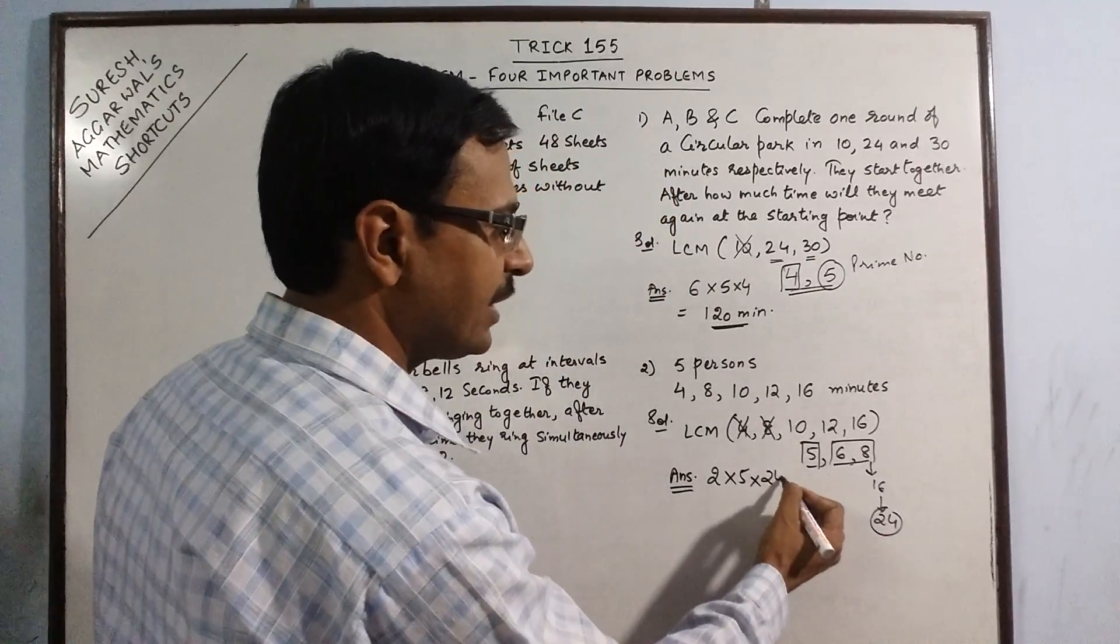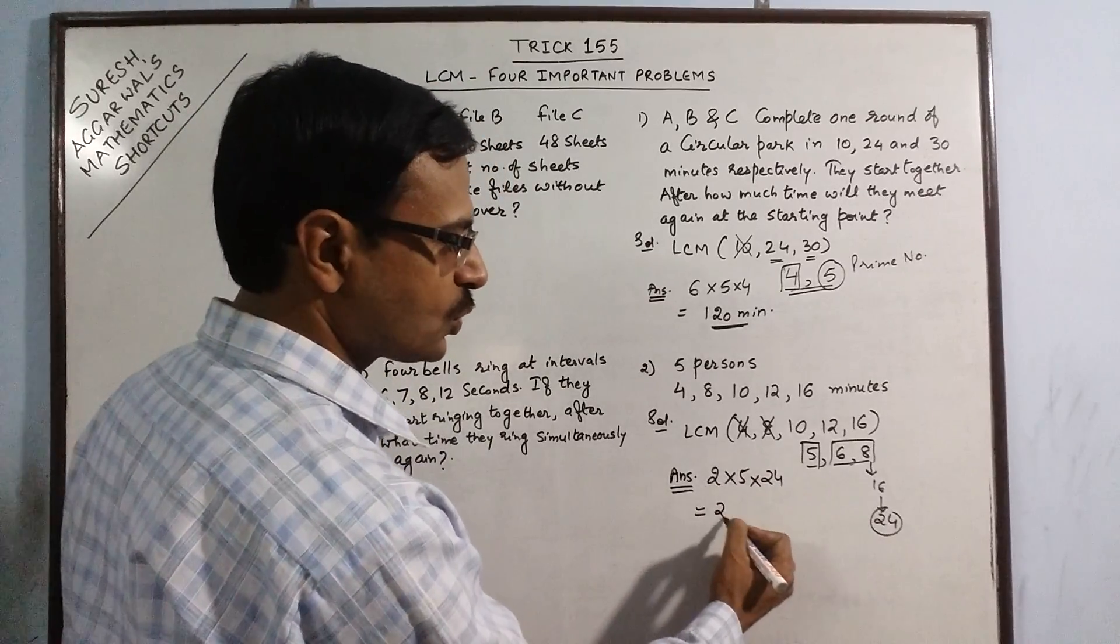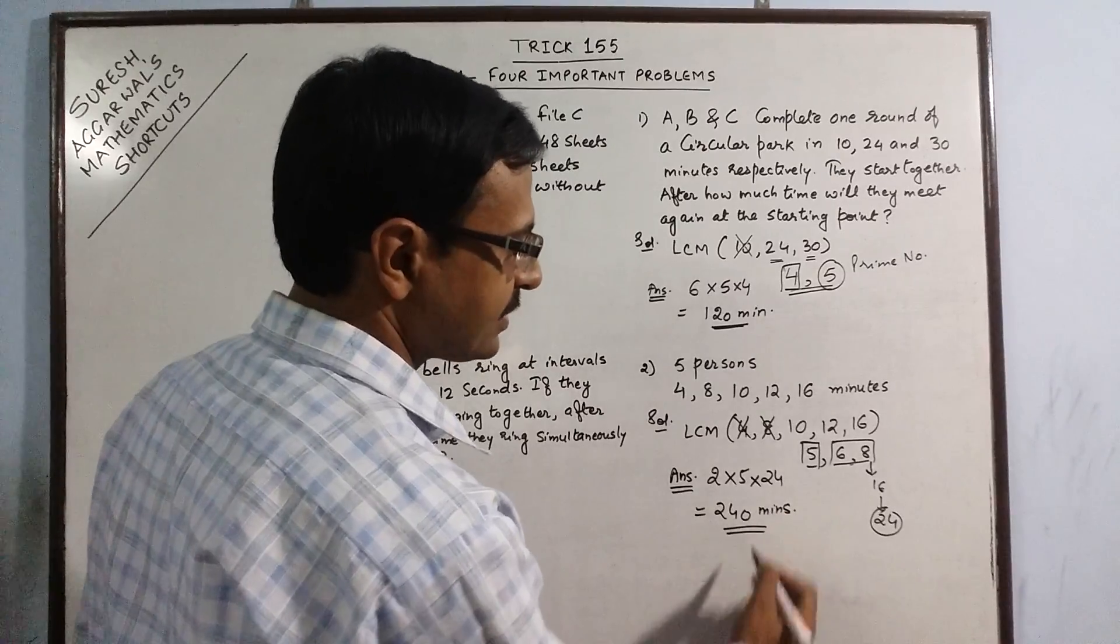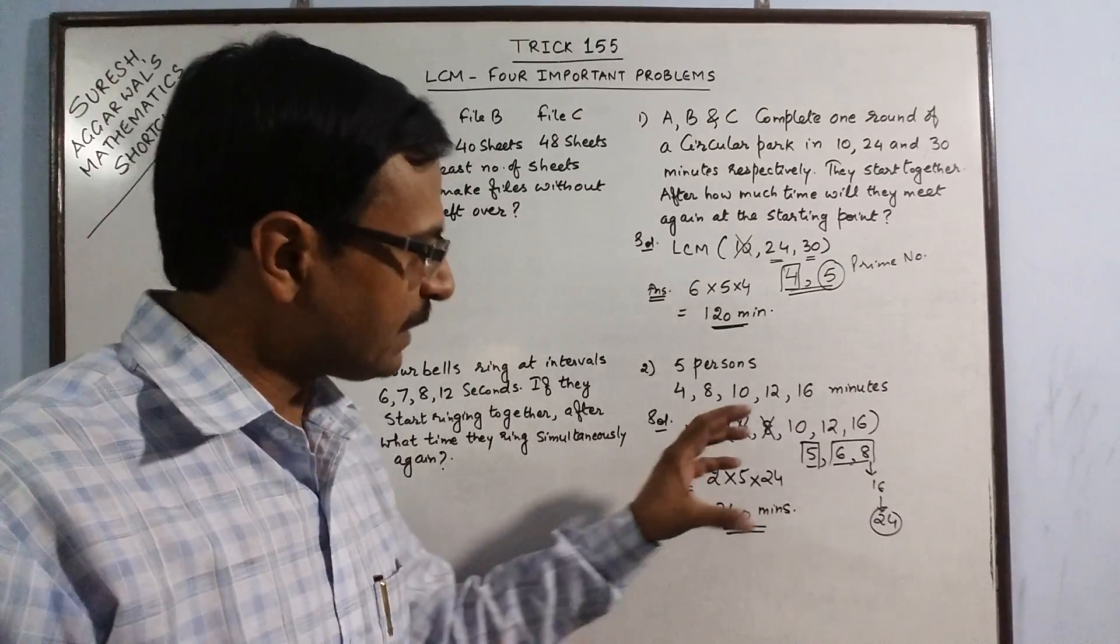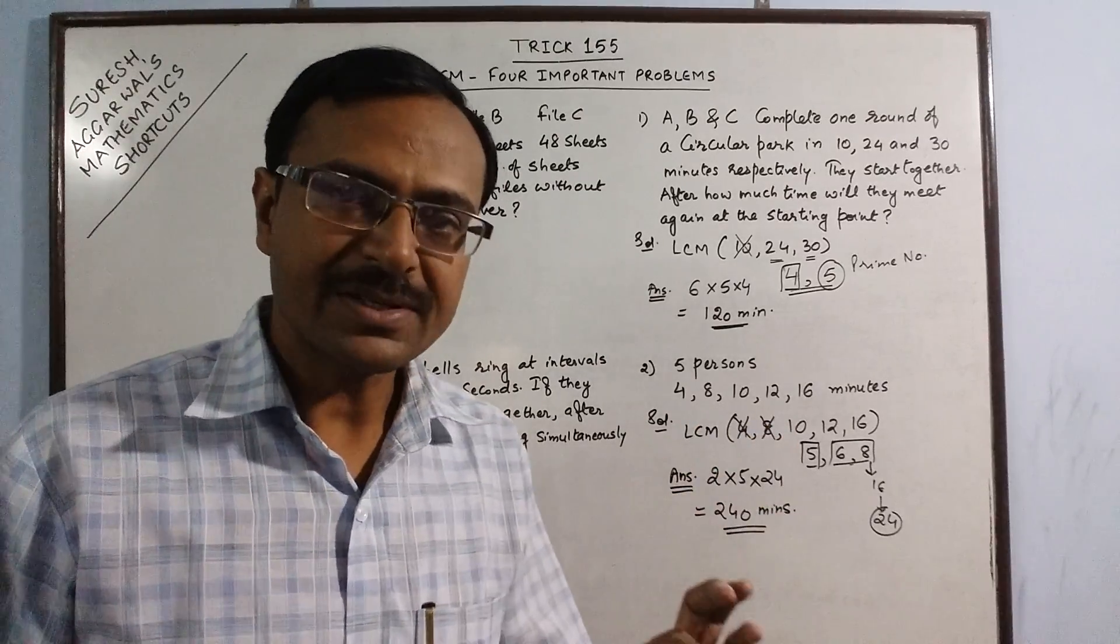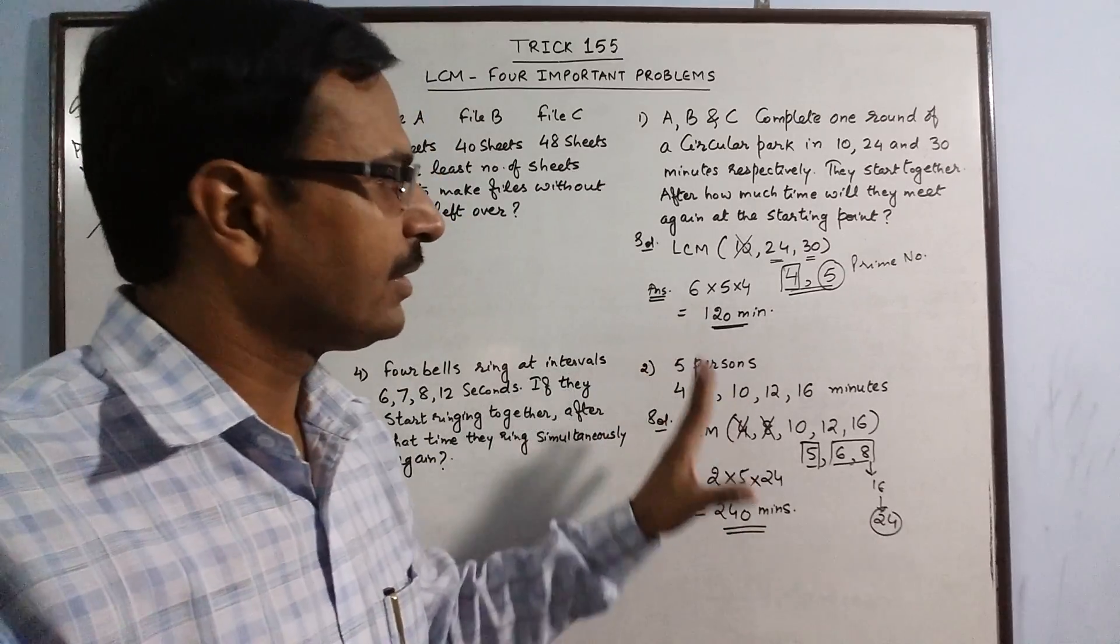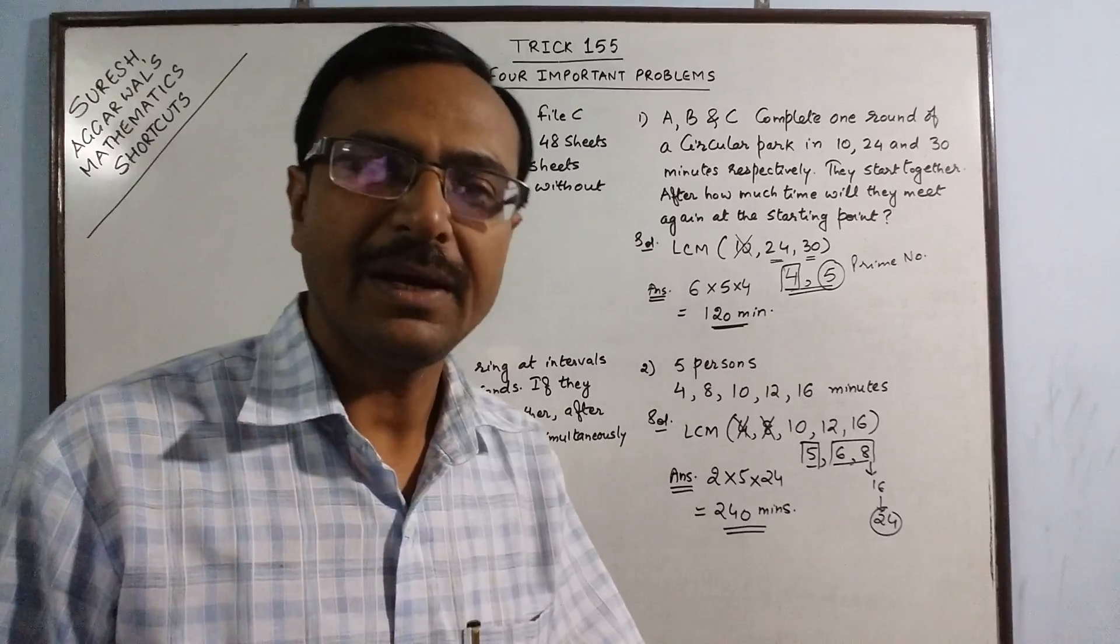So 5 to the 10 and 24 is 240 minutes is your required answer. Just by inspection and little understanding of what LCM is, you can find the correct answer without use of traditional method of finding LCM.